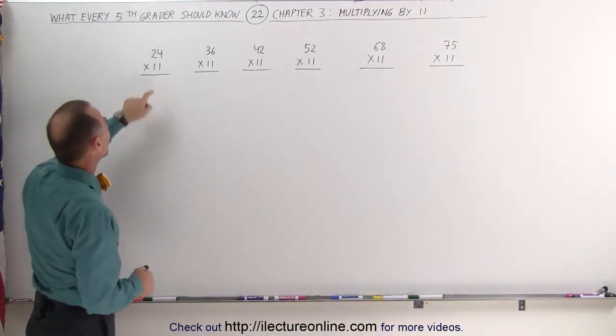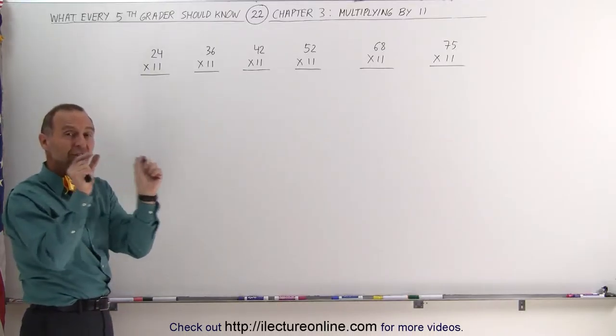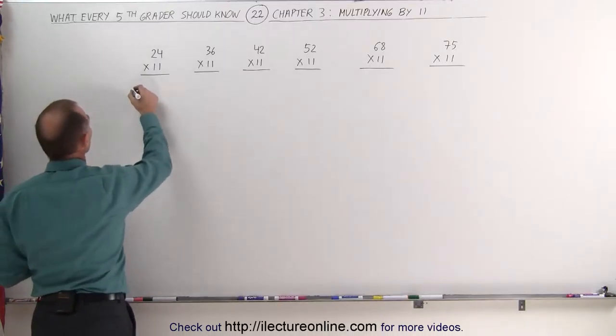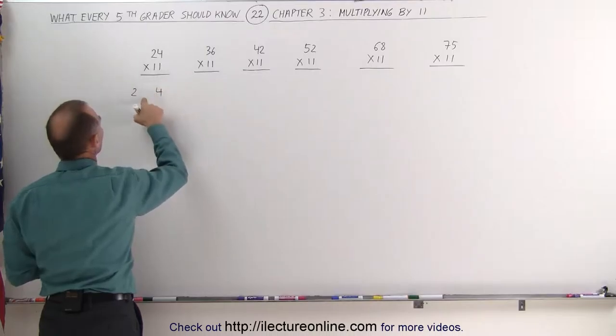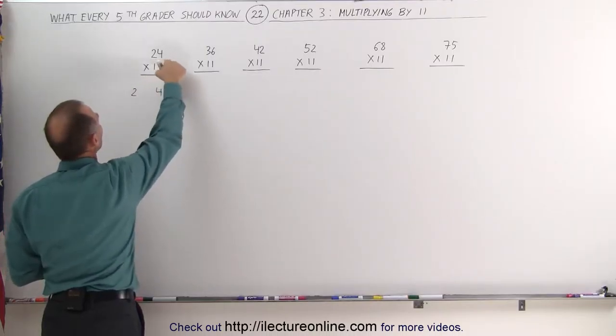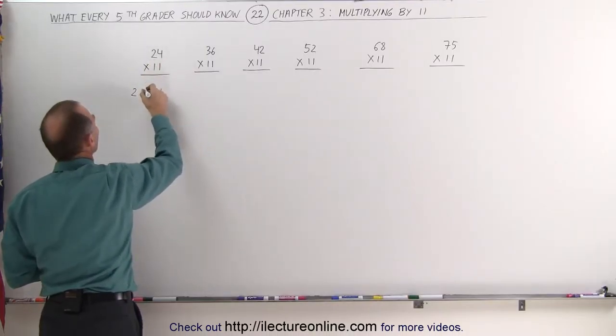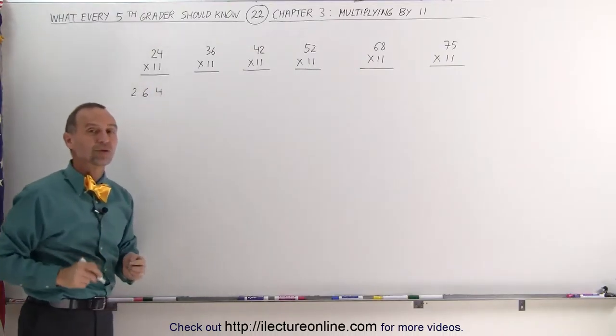Let's say we multiply 24 times 11. What you do is you take the two numbers and you separate them from one another. You write down the 2, you write down the 4, it leaves some room in between. Then you add the two numbers, 2 plus 4 is 6, put in there, the answer is 264.